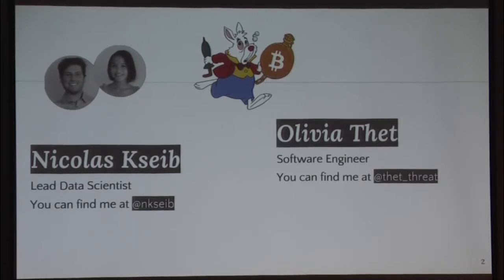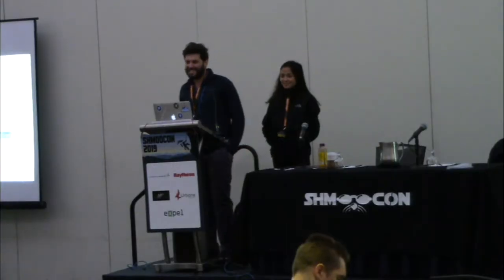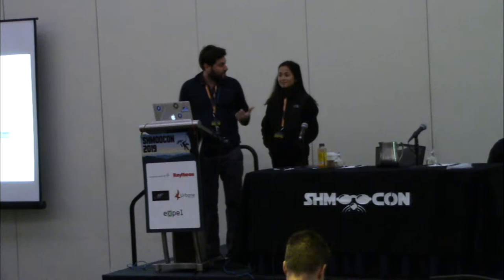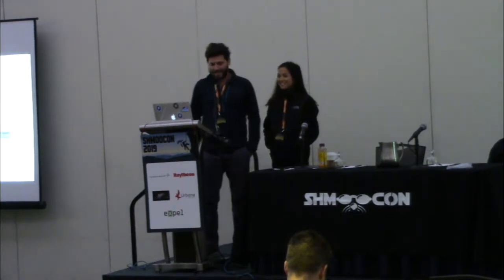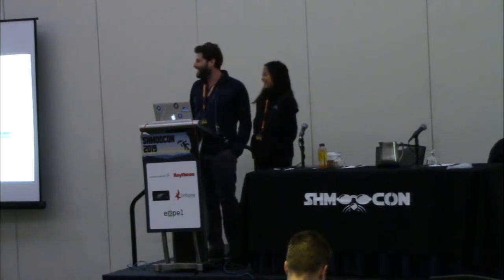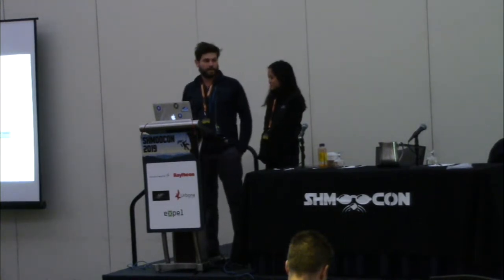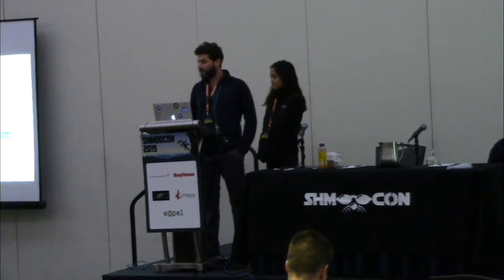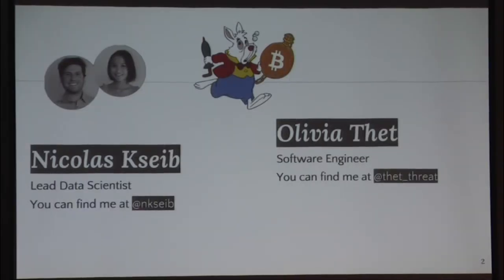Alright, let's go ahead and get started. Hopefully everyone's here for the CryptoLocker deep dive. Let's hand off to Nicholas and Olivia. This is actually Olivia's first time at ShmooCon. Today we're going to talk about a tool that we worked on together called White Rabbit, which basically helps you to track adversaries on the Bitcoin public ledger. We said we'd talk about CryptoLocker, but we also added another campaign related to the Ryuk ransomware campaign.